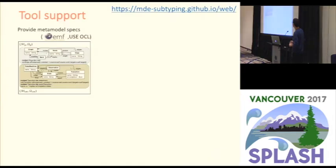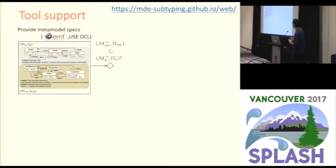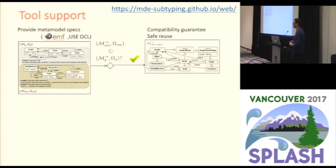Our tool takes two metamodel specifications defined with Eclipse Modeling Framework, with OCL constraints defined in USE format. It works as a Java library independent of Eclipse, so it can be reused from any JVM context. With this library, we can check whether one metamodel specification defines a subtype of another. If this predicate holds, our tool generates a proof — the extension metamodel — which can also be used to reuse operations defined for the supertype metamodel.